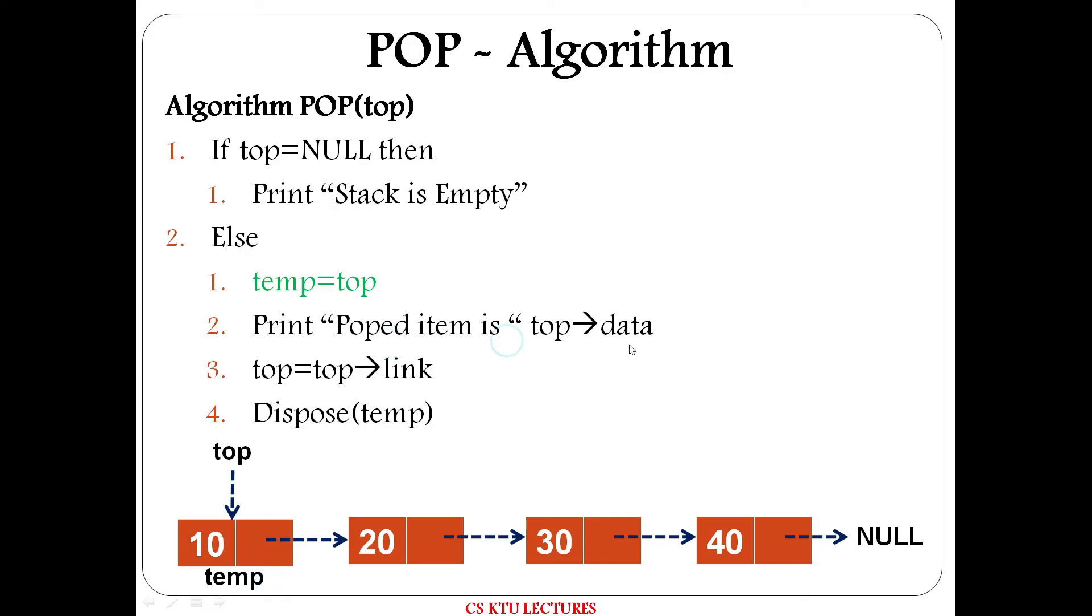Then popped item is top arrow data. The top node is 10. We are going to delete the first node. Then the top node should point to the second node. So top equals top arrow link. Second node is the top node. Then the first node is deleted. That means dispose temp. This is the resultant stack.